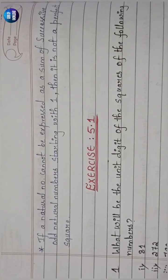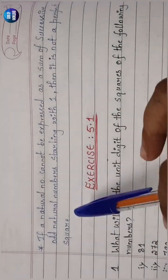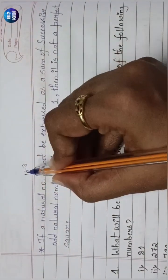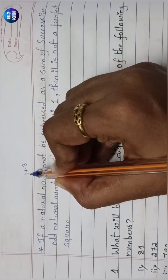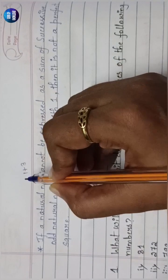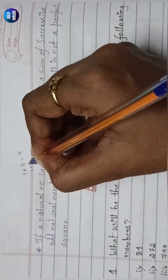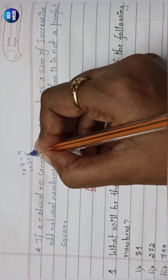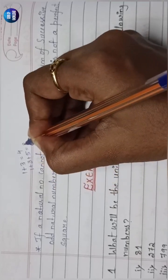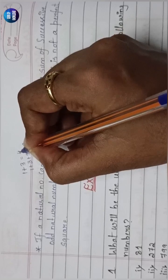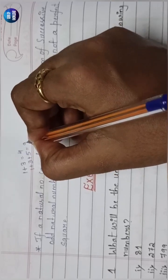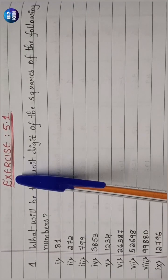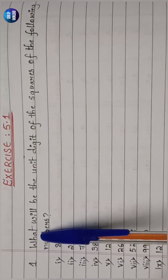For example, 4 = 1+3, which is a sum of successive odd numbers, so 4 is a perfect square. Similarly, 1+3+5 = 9, which is also a perfect square. Going on like this, you keep getting square numbers. Now let's quickly solve Exercise 5.1.